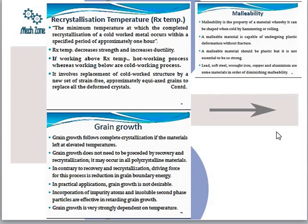Malleability is the property that allows a material to be deformed such that it can be beaten into sheets, without fracture. The material capable of undergoing plastic deformation without fracture is called a malleable material. Lead, soft steel, wrought iron, copper, and aluminum are some materials in order of diminishing malleability. Aluminum is the least malleable among them.